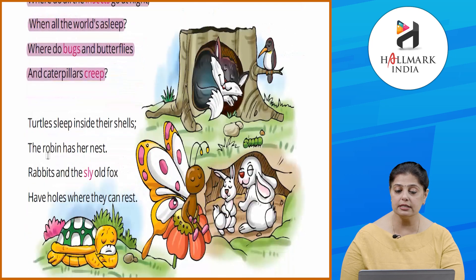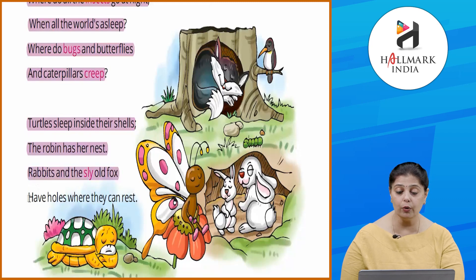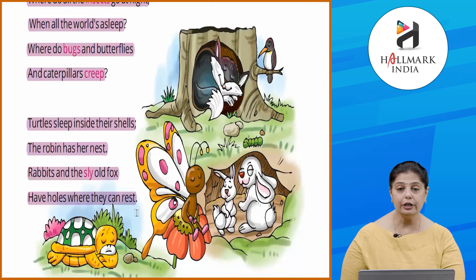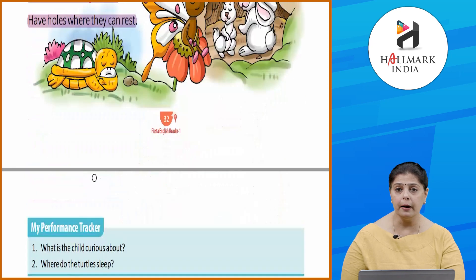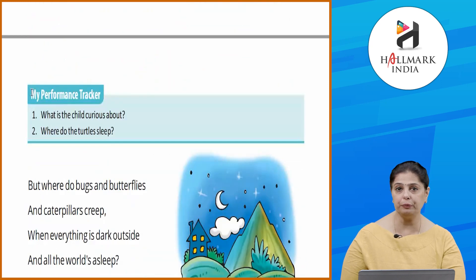'Turtles sleep inside their shells, the robin has her nest, rabbits and sly old fox have holes where they can rest.' Turtles ke paas unke shells hote hain, robin ke paas uska nest hai, rabbits aur old fox — jo sly hota hai — wo hole ke andar rehta hai. Par insects sab kahan jaate hain?